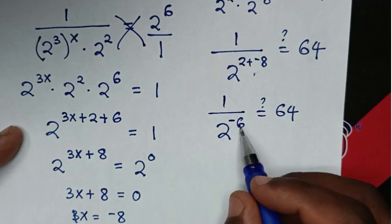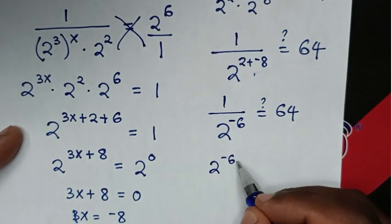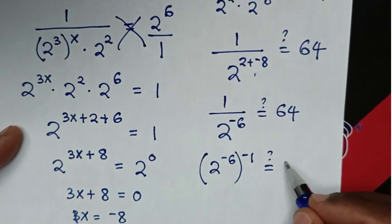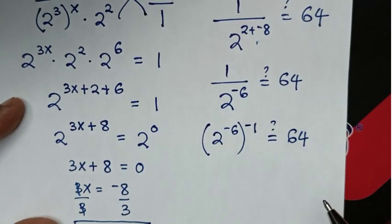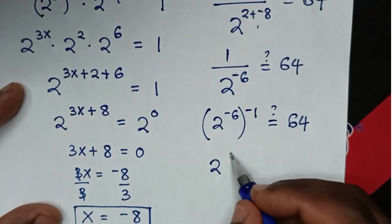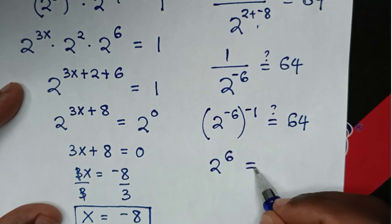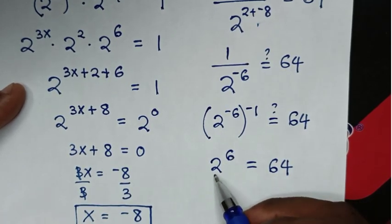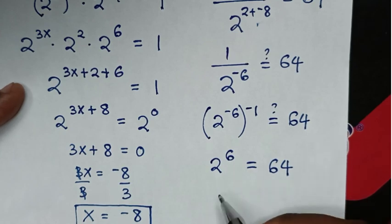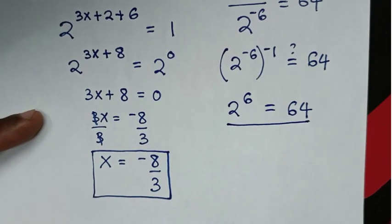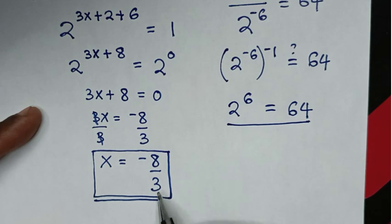Moving 2^(−6) to the numerator gives (2^(−6))^(−1), which equals 2^(+6). And 2 to the power of 6 is indeed 64. The left side and right side are equal, confirming that x equals negative 8 over 3 is correct.